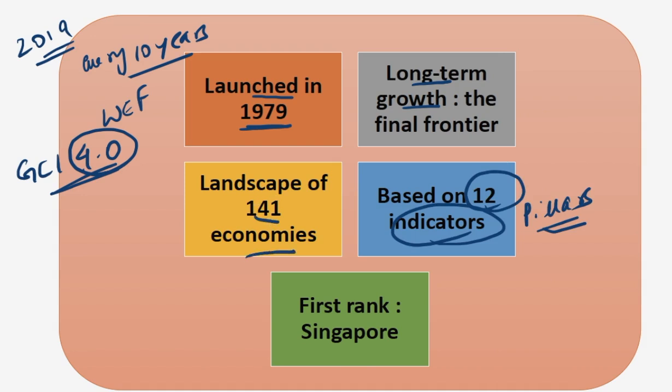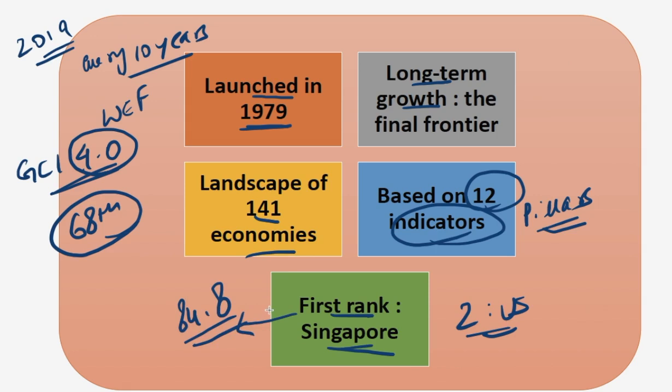141 economies have been considered for this GCI index, wherein India ranks 68th. To your surprise, the first rank is not held by the US but by Singapore, and second is the US. This index particularly sees how a country is utilizing its resources to have efficient output. Singapore's score is 84.8, meaning Singapore is the world's most competitive economy in 2019.